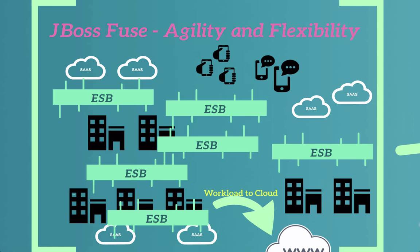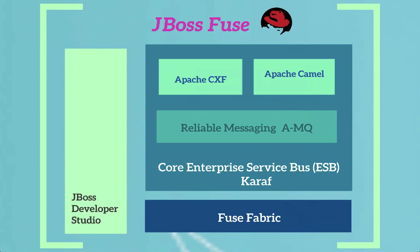So what is within JBoss Fuse? Within JBoss Fuse, we have the OSGi container — it is the foundation of Red Hat JBoss Fuse. It is a very lightweight, agile container that allows our ESB to run on. And we have Fuse Fabric, which is the management side of JBoss Fuse. It allows you to manage all the distributed containers and handles load balancing for JBoss Fuse.